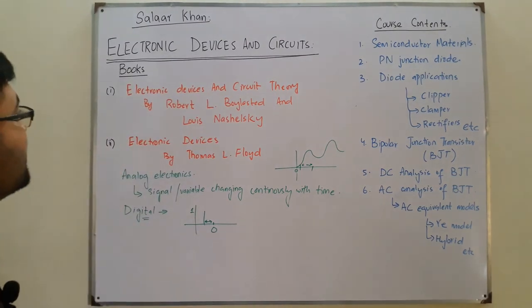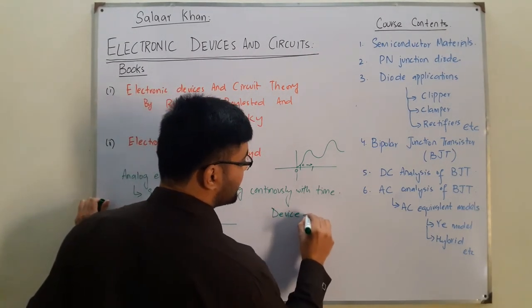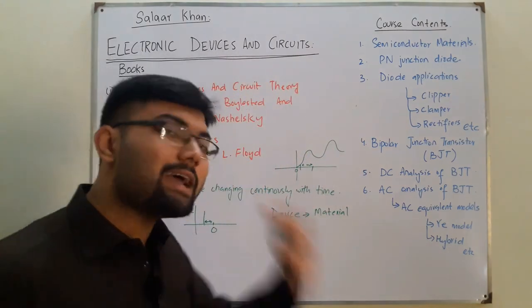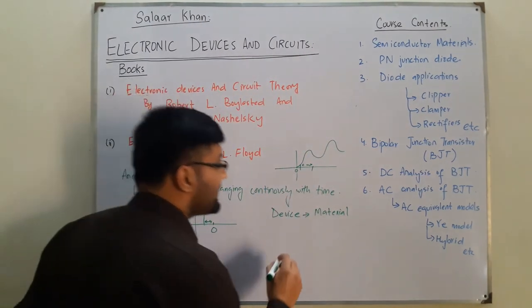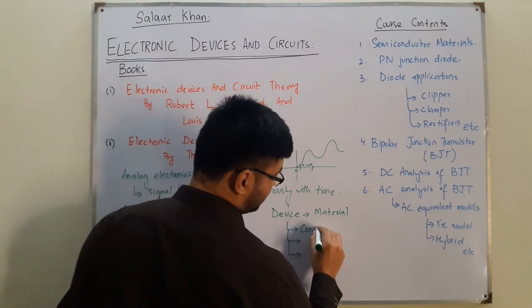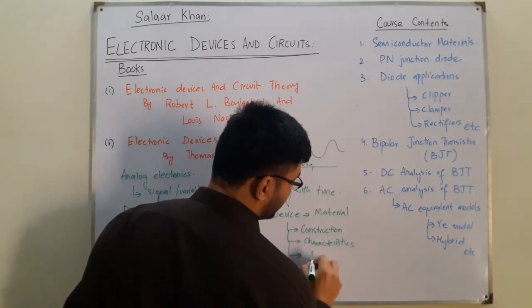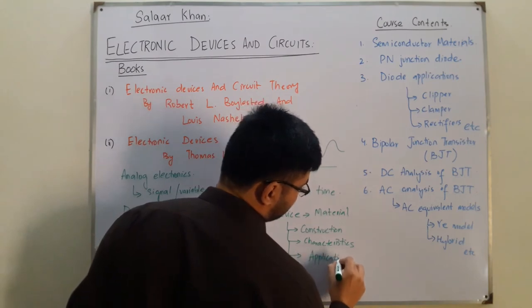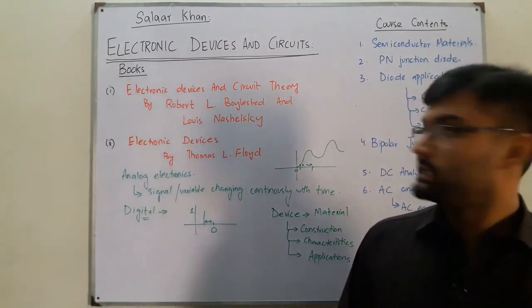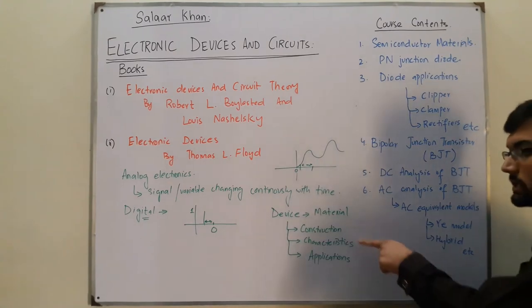Now, what is a device? A device is any material or component. To understand any device you need to know three things: first, its construction; second, its characteristics; and third, its applications. All the devices we study here — diodes, BJTs — we will know their construction, characteristics, and applications.